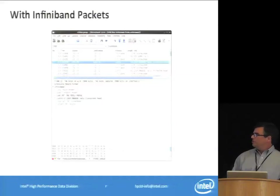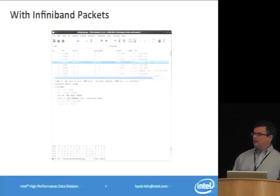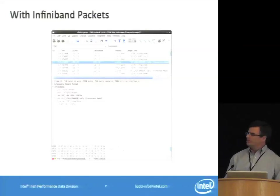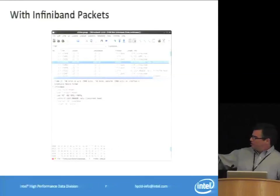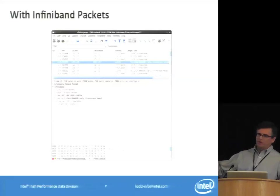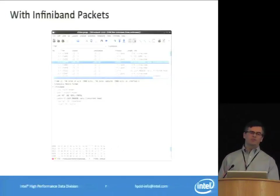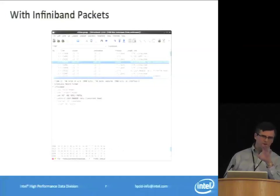If you capture InfiniBand, the source and destination fields aren't IP addresses — they come back with LIDE numbers if you're using RDMA. When you look at the protocol breakdown for a given packet, the LNET and Lustre protocols are within the InfiniBand frames. You have to expand the InfiniBand protocol to be able to see those, so don't miss that.